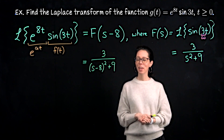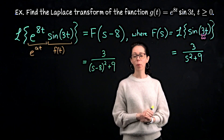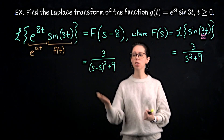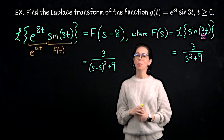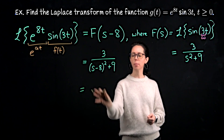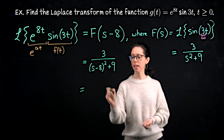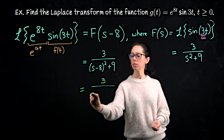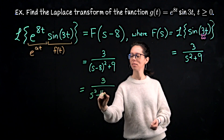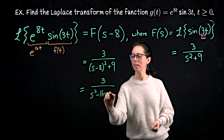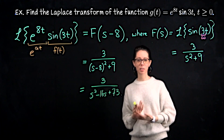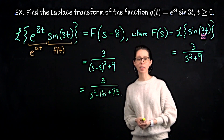We're done, but I want to say one more thing. This is in a nice factored form — looking at it, you can back out that it was sine shifted by 8. But sometimes this denominator wouldn't be written in such a nice way. What you could have seen instead is 3 divided by s squared minus 16s plus 73. Written this way, we have an expanded quadratic in the denominator, and that's what we'll see in the next example.